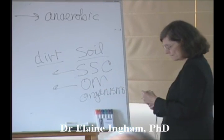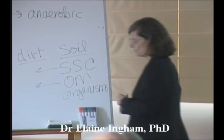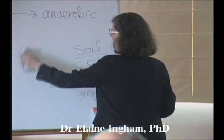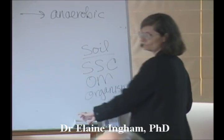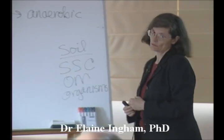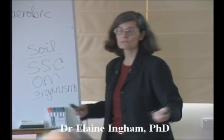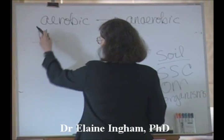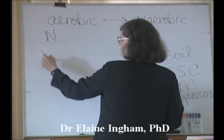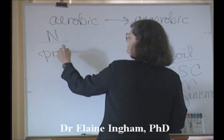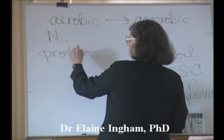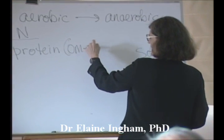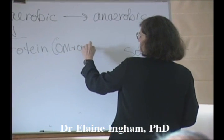What's the predominant form of nitrogen in soil? It's in the organisms. It's in the organic matter. So most of the time that nitrogen is present as protein — that's organic matter and organisms.